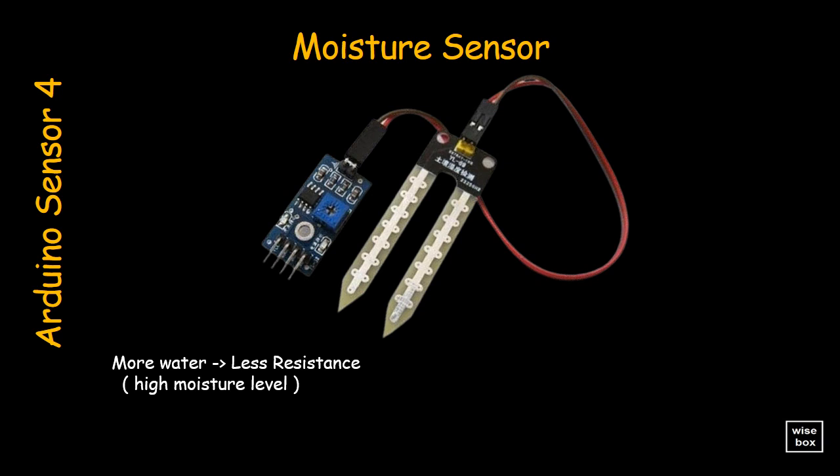Dry soil reduces conductivity. So when there is less water, the soil conducts less electricity, which means it has more resistance. Thus, the moisture level will be lower.